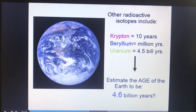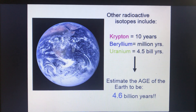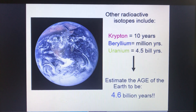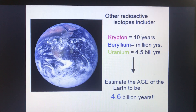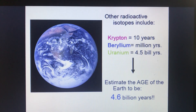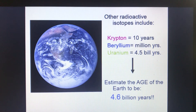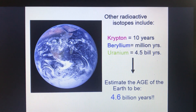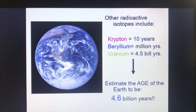From all of this information, we can collaborate and figure out how old the Earth is. Based on radioactive isotopes, we've estimated the world to be 4.6 billion years old.